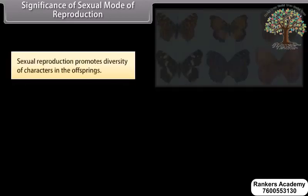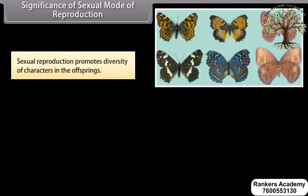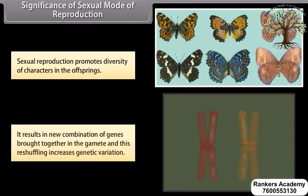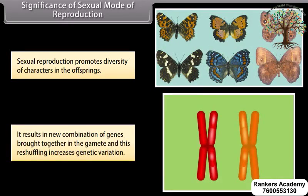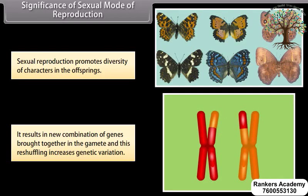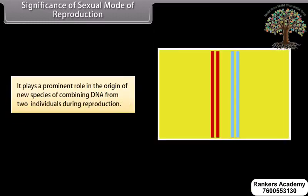Significance of sexual mode of reproduction: Sexual reproduction promotes diversity of characters in the offspring. It results in new combinations of genes brought together in the gamete, and this reshuffling increases genetic variation. It plays a prominent role in the origin of new species by combining DNA from two individuals during reproduction.